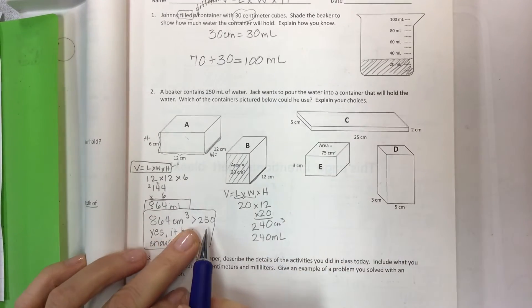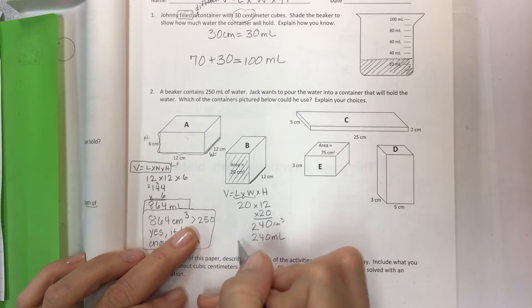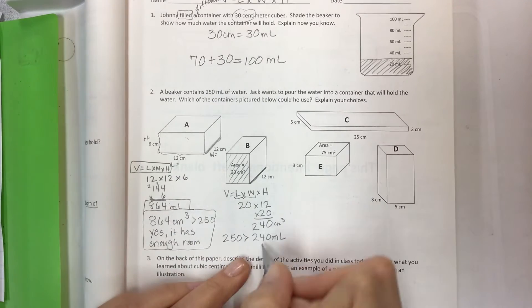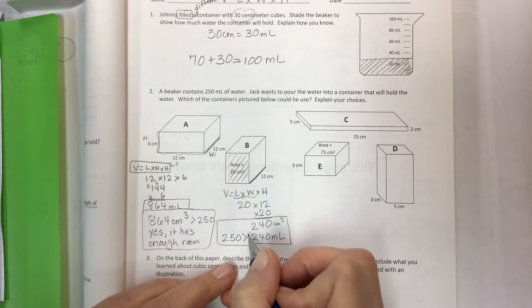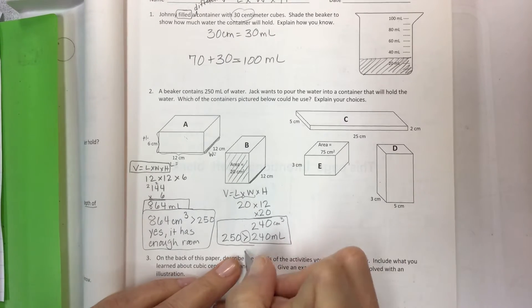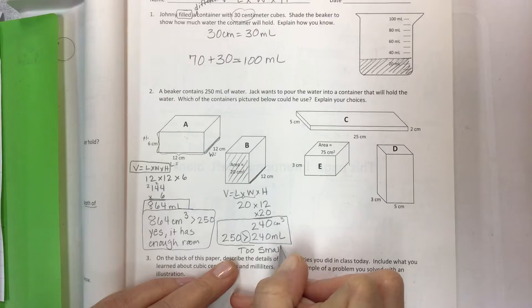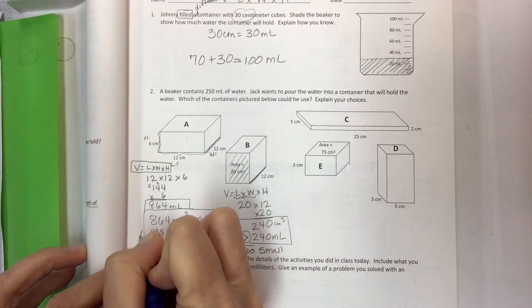And so the container, the beaker that contains the water is 250 and 250 is greater than 240. So this one's too small. B is too small, A has enough room.